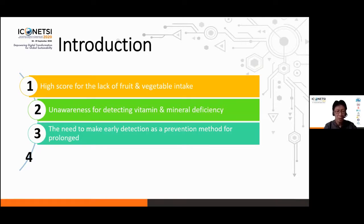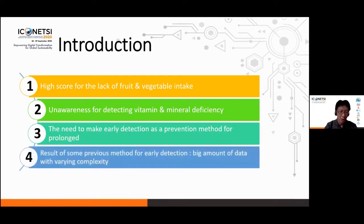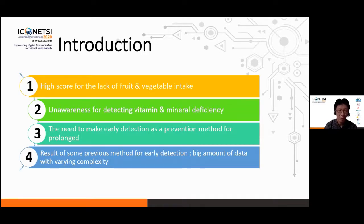As the previous works in detecting mineral and vitamin deficiency show, the methods used are still focused on the static environment using traditional rule-based systems and uncertainty methods that still do not consider the large amount of data with varying complexity that arises from the number of symptoms and the relationships between the symptoms.